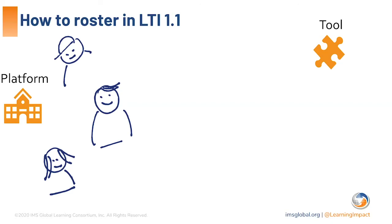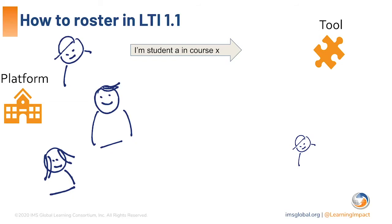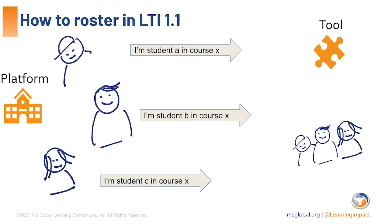The next service is rostering. Drawing a comparison to LTI 1.1, which is very broadly implemented in the marketplace: a common complaint was that a tool couldn't know what students were in a course until each student individually clicked a link and did an LTI launch. As each student came, the tool could build up its version of the roster, but it never knew if students were missing or if new students had been added. While it was a great foundation, there were many features people wanted.